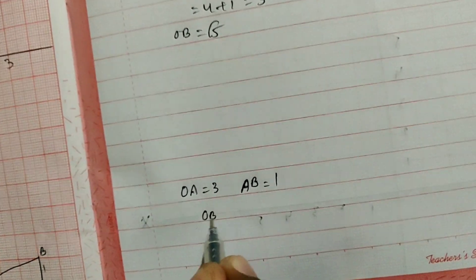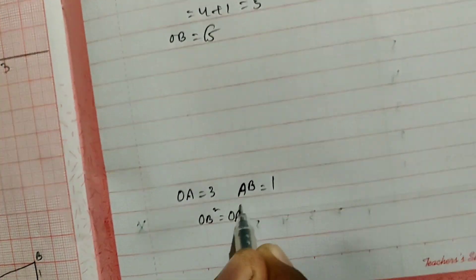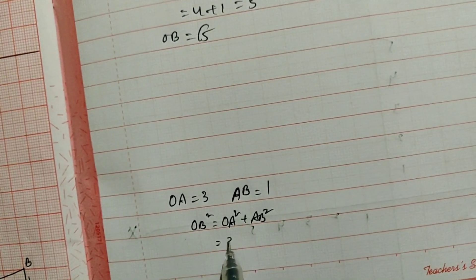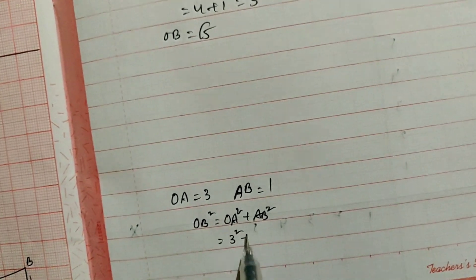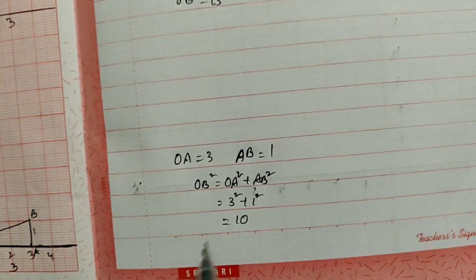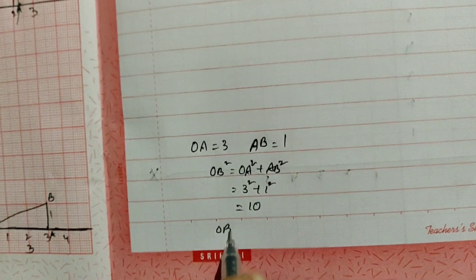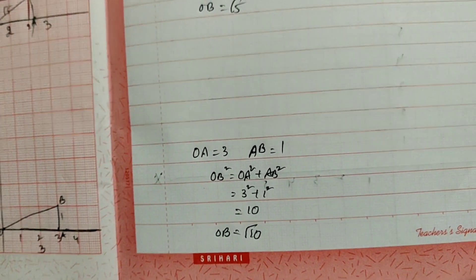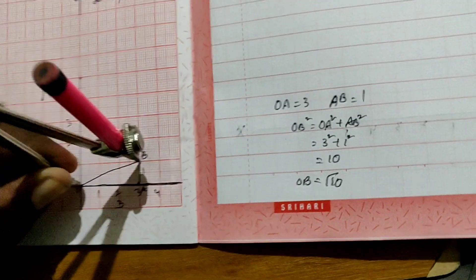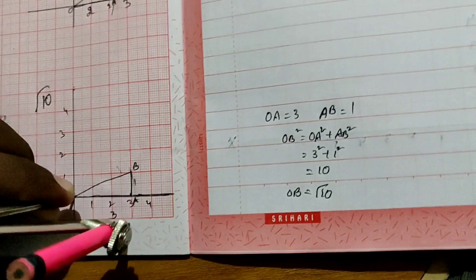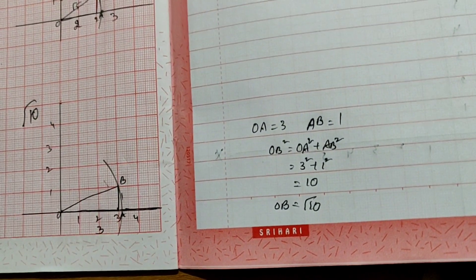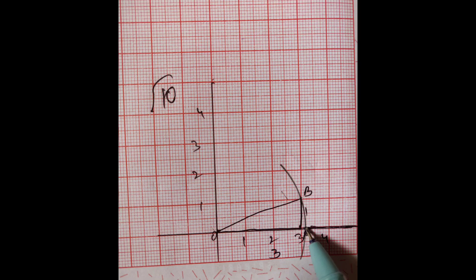According to Pythagoras' theorem, OB square is equal to OA square plus AB square, that is 3 square plus 1 square, where 3 square is 9 and 1, which equals 10. So OB is equal to the square root of 10. Taking OB as radius, draw an arc which cuts the x-axis at one point. This is the value of root 10.